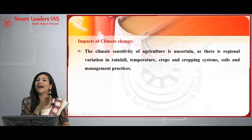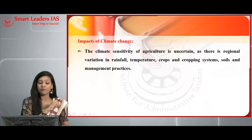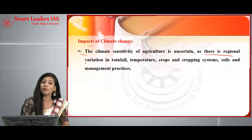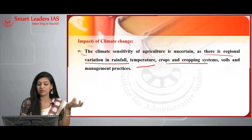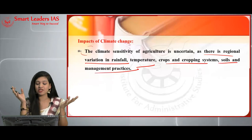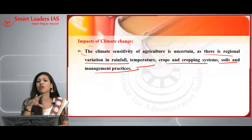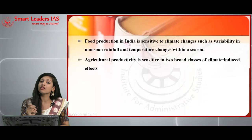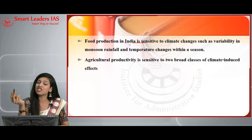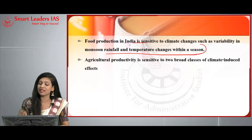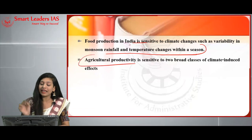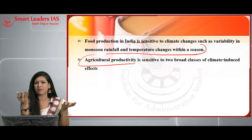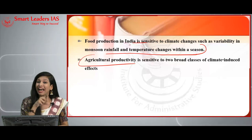The impacts of climate change on agriculture: first, the climate sensitivity of agriculture is uncertain due to regional variations in rainfall, temperature, crops, cropping systems, soil, and management practices — variations in all these factors lead to climate changes affecting agriculture. Second, food production in India is sensitive to climate change because of variability in monsoon rainfall and within-season temperature changes. Agriculture productivity is sensitive to two broad classes of climate-induced effects: direct and indirect.